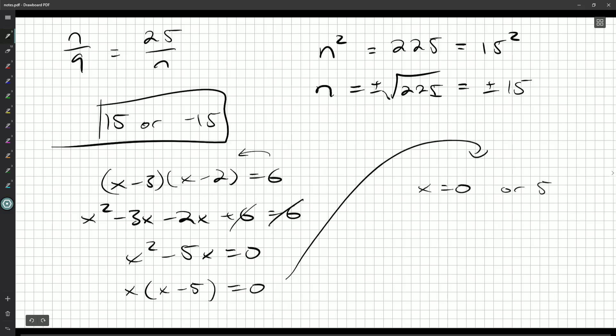Remember, if you have a product of two things being equal to 0, one of those two things, or possibly both, are equal to 0. So either x is equal to 0 or x minus 5 is equal to 0. Okay? If you want to, of course, you can double check. Plug the 0 back in here. Minus 3 times minus 2 is 6. Or 5 minus 3, 2 times 3 is also equal to 6. Okay? And there we go. So 0 or 5.